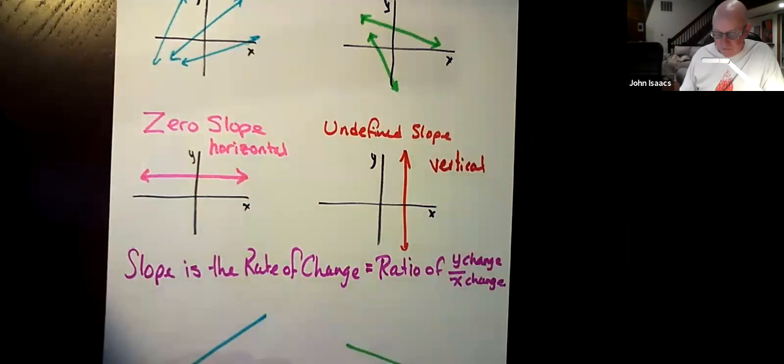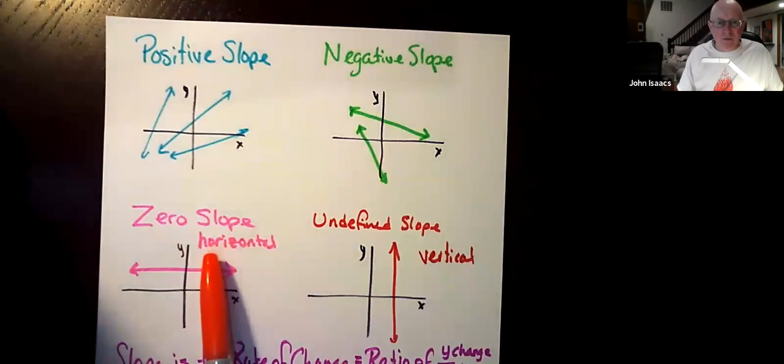So there's a little mixture that's in your notes. Positive slope, negative slope, zero slope, undefined slope.